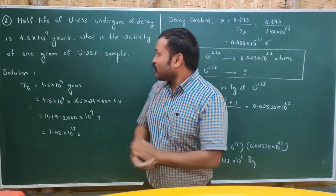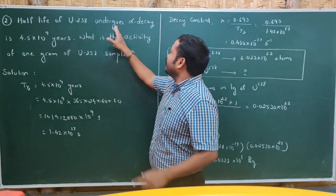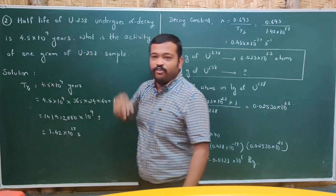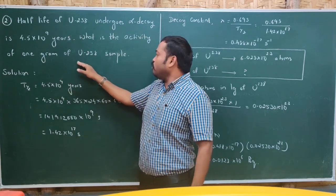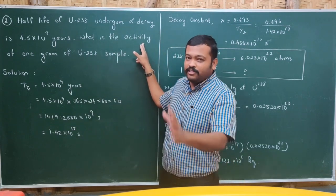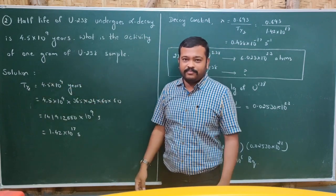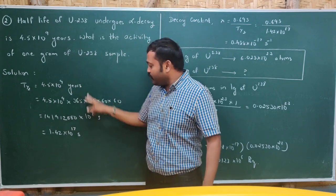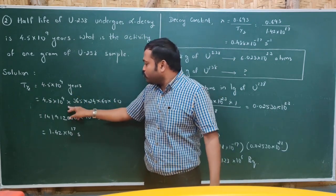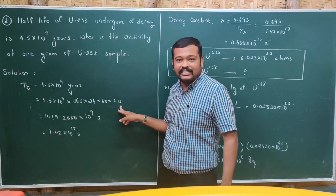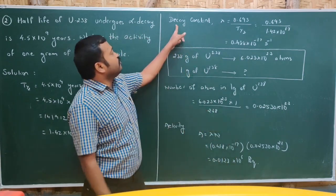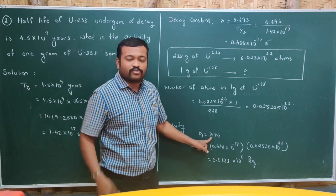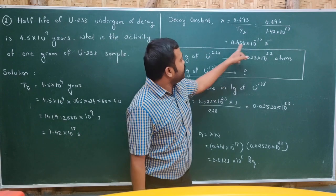This is an activity-based problem. The half-life of Uranium-238 undergoing alpha decay is 4.5 × 10⁹ years. What is the activity of 1 gram of Uranium-238? Half-life is given as 4.5 × 10⁹ years, which we convert to seconds by multiplying by 365 days × 24 hours × 60 minutes × 60 seconds. Then calculate decay constant λ = 0.693 divided by T-half.